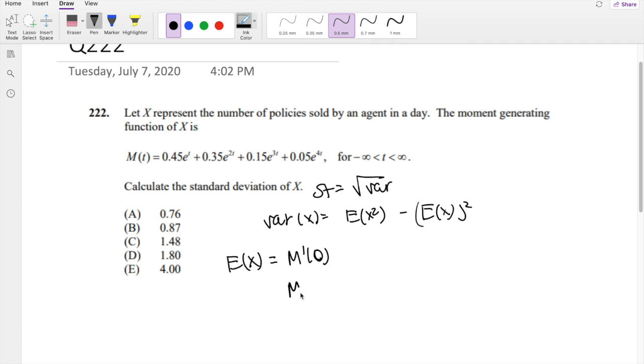So knowing that, let's first find the derivative of the moment generating function. You get 0.45e^t plus 2 times 0.35e^(2t) plus 0.15 times 3e^(3t) plus 4 times 0.05e^(4t). When you evaluate it at 0...